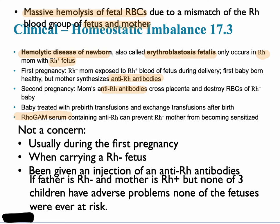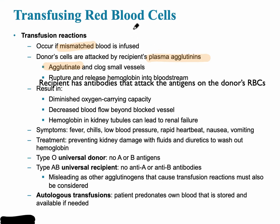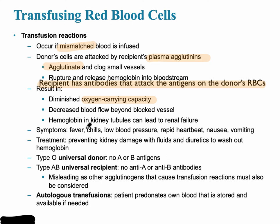To summarize: transfusion reactions occur when mismatched blood is infused, and the donor cells can be attacked by the recipient's agglutinins — those are the antibodies. The agglutinogens are the antigens. The recipient has antibodies that attack the antigens on the donor red blood cells, leading to problems such as diminished oxygen-carrying capacity, decreased blood flow, and other complications from the reduced red blood cell count.